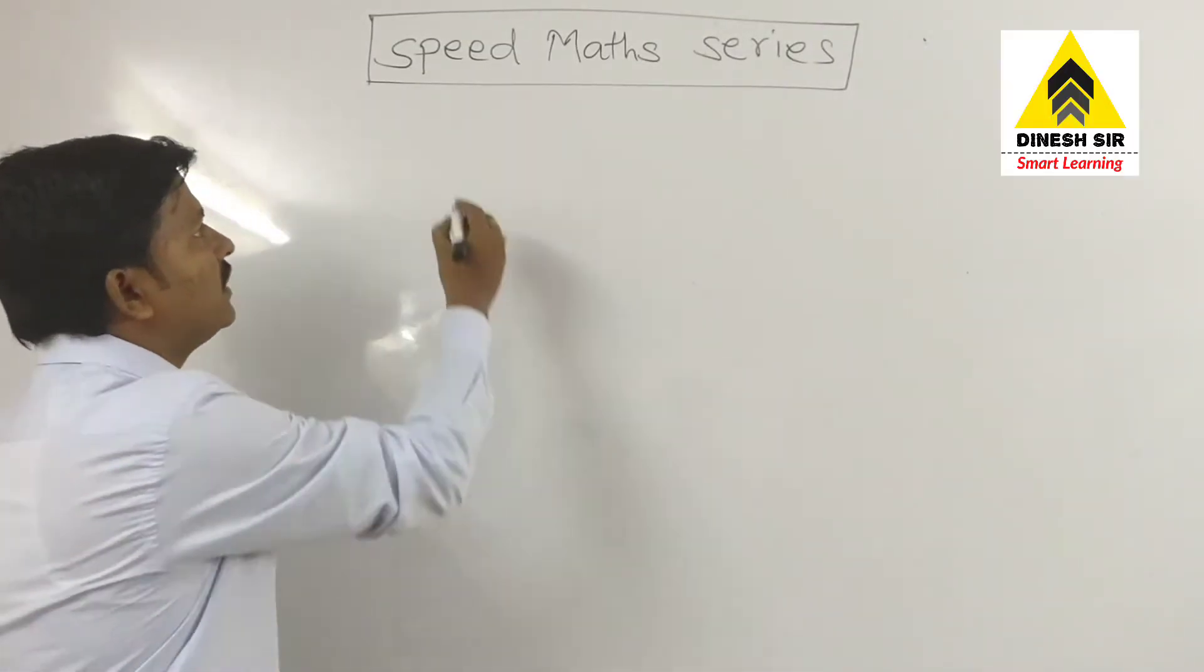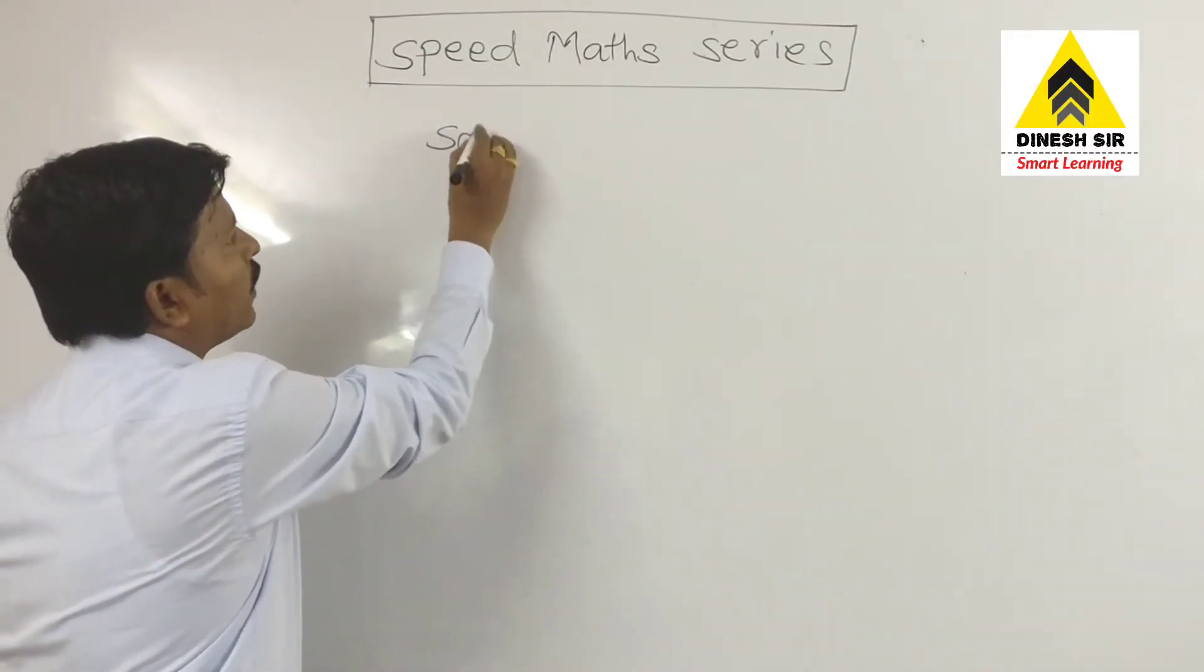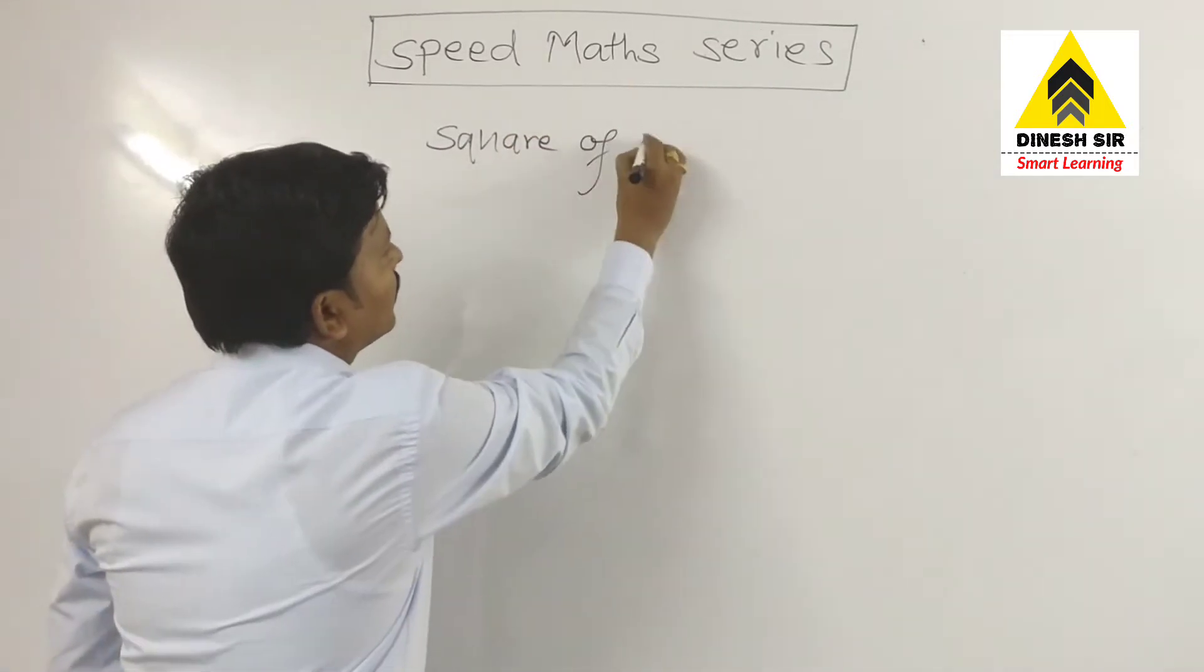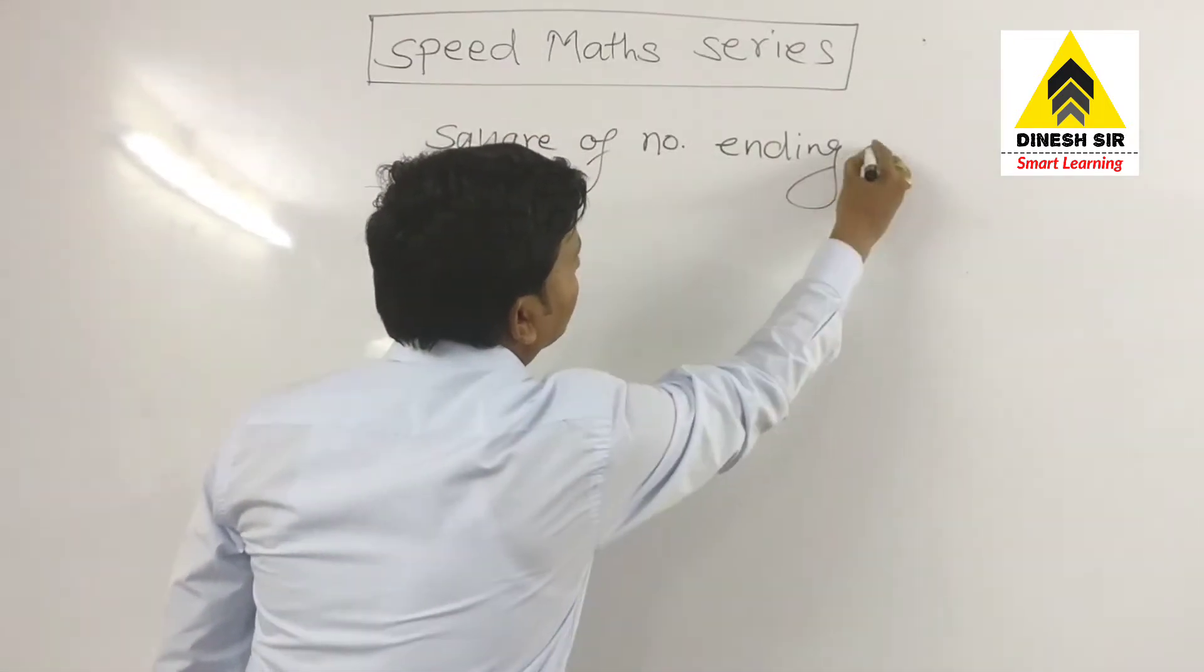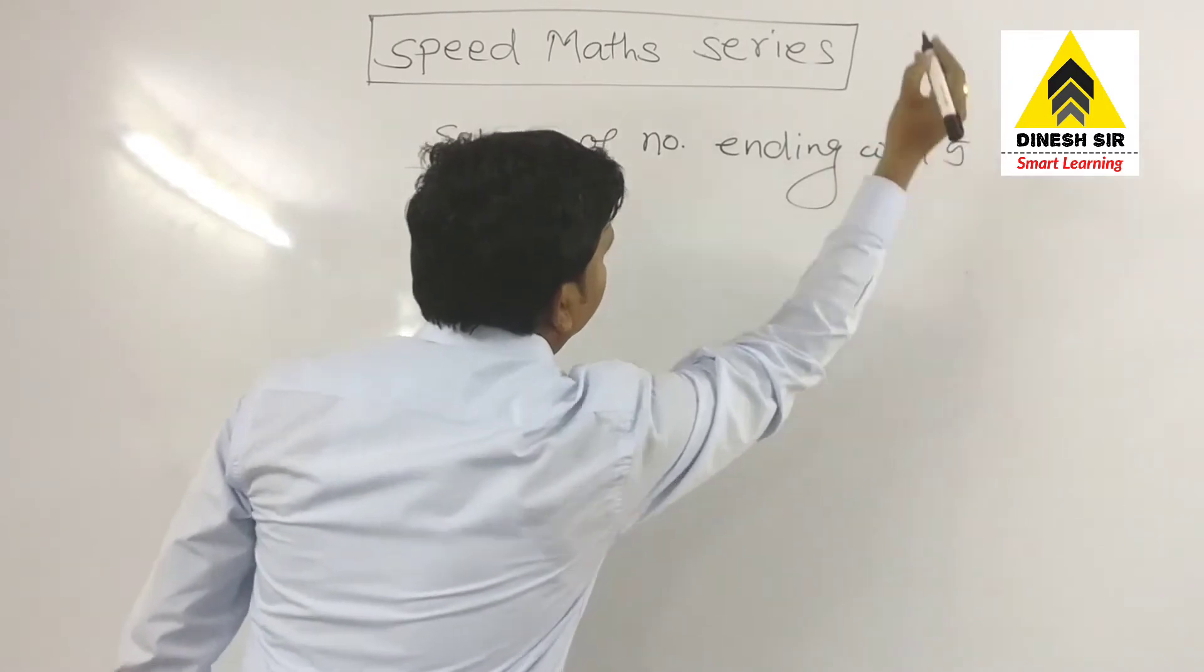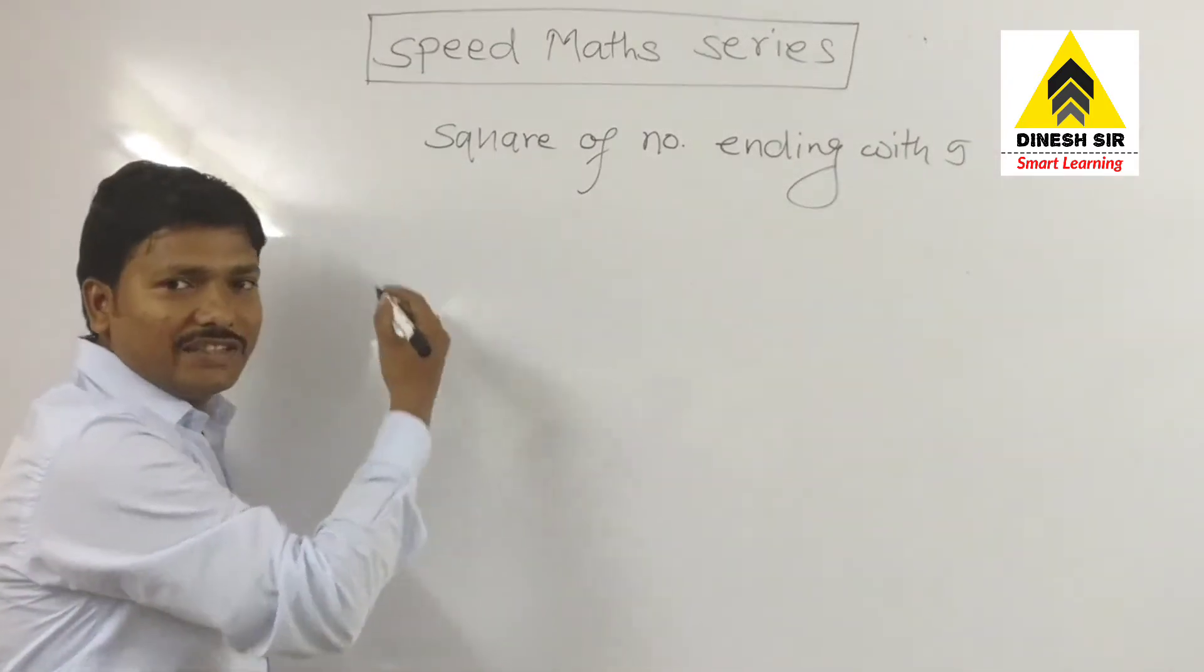So friends, if we want to take square of number ending with 5, let's see.